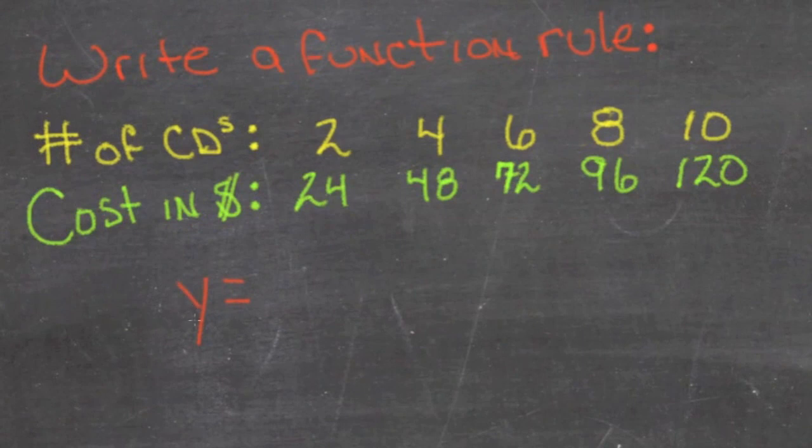The output cost, or the overall cost, is going to be the number of CDs, let's call that x, times $12 per CD.